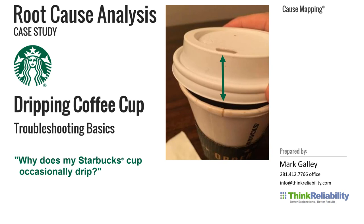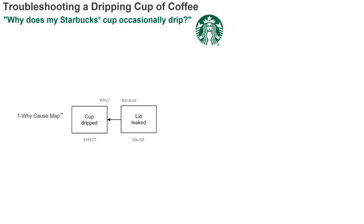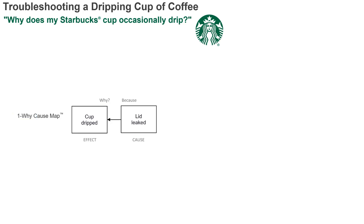We're going to step through this and show you how to conduct a thorough root cause analysis. We're going to go through more complex issues later, but this is just a coffee cup. We laid this out as a simple cause-and-effect relationship. On the left it says 'cup dripped' — that's an effect. When you ask why the cup dripped, people would say the lid is leaking. This is a one-why, or a one-why cause map as we label it.